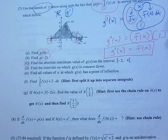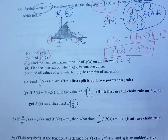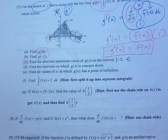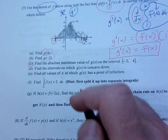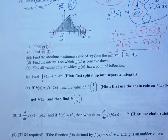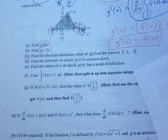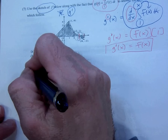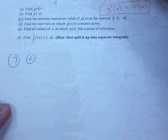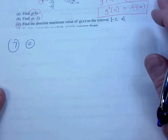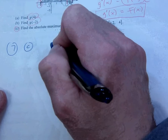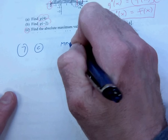They may or may not ask you to justify your answer — they just might ask where is it at its maximum. If they ask you to justify, then you justify. Now we want more than that — we want to actually find the absolute maximum. So for 7C, to find the absolute maximum, we know it's at x equals 3, so the maximum is G of 3.